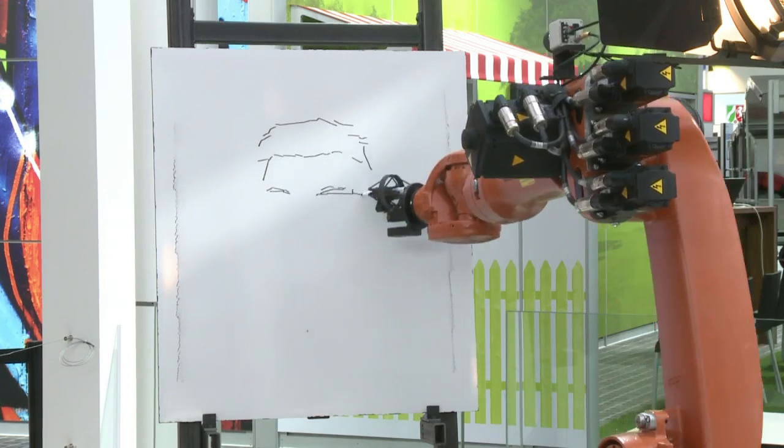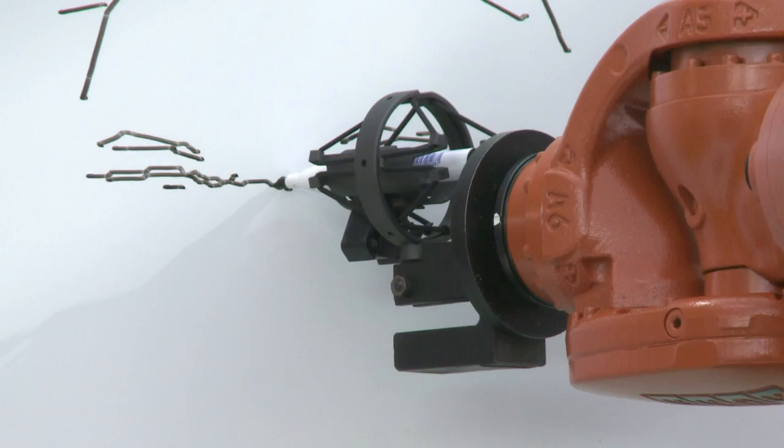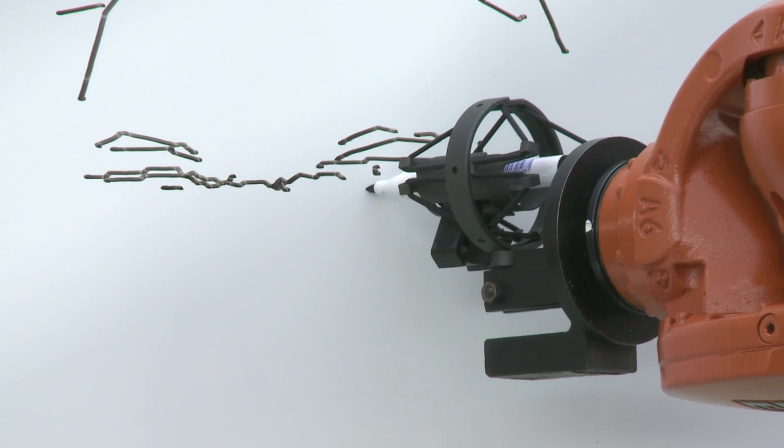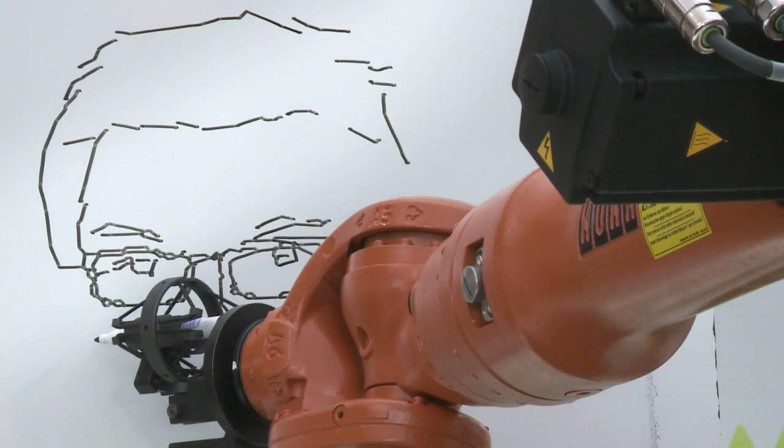Actually, in the lab we use this robot for measurements of reflectivity of different materials, for remote sensing for example or for security. But here for Sebit, the robot has a lazy day and just takes portraits of people.